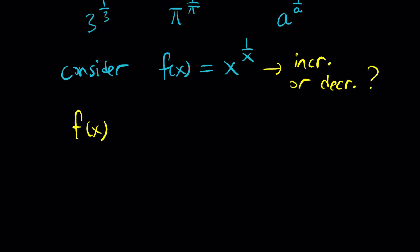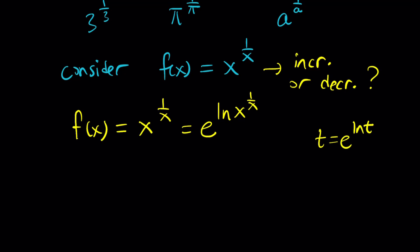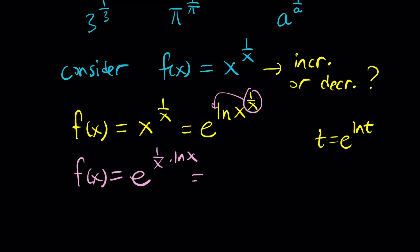We're going to take this function and write it differently so we can differentiate it. Let's write it as e to the power ln x, all over x. As you hopefully know, you can write any t as e to the power ln t. This gets rid of the variable-to-a-variable situation, for which we don't really have derivative rules. Bringing the 1 over x to the front gives e to the power ln x over x, written as a quotient for simplicity.